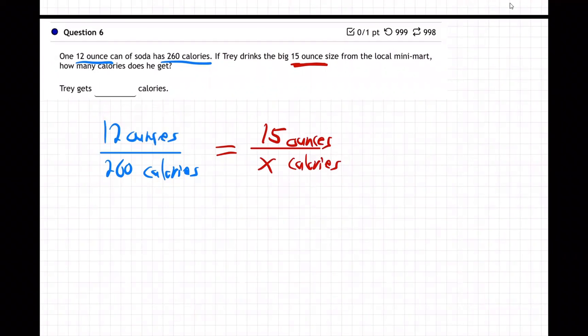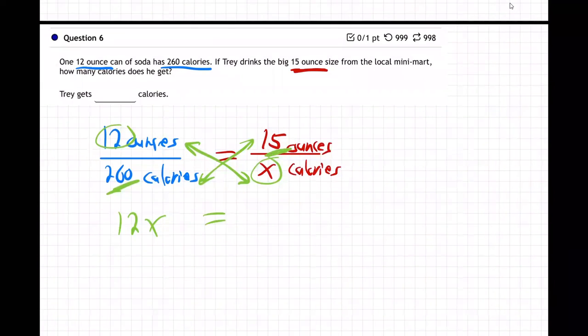Now, how do we solve when we have two equal fractions? You cross multiply. Diagonal, diagonal. So 12 times x equals 260 times 15.